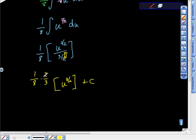And this gives us 2/24, so 1/12, isn't that right? So equals 1/12 u to the 3/2 plus c is our solution.